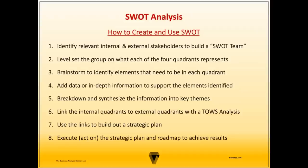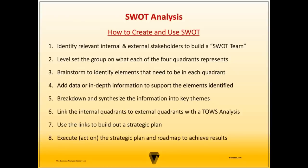Now let's look at how to create and use a SWOT analysis. First, identify relevant internal and external stakeholders to build a SWOT team. Next, level set the group on what each of the four quadrants represents. Then brainstorm to identify the elements that need to be in each quadrant. After that, add data or in-depth information to support the elements identified with more formal approaches such as PESTLE — there's a link in the description for more on that. Next, break down and synthesize the information into key themes. Then link the internal quadrants to the external quadrants using a TOWS analysis.